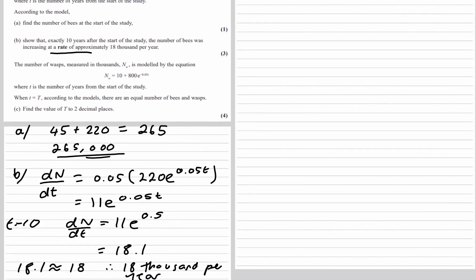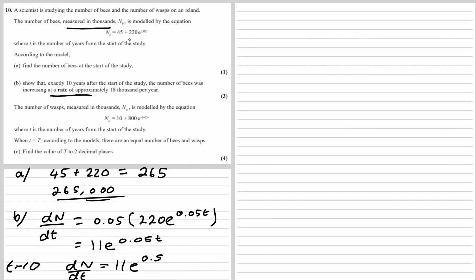For Part C, the number of wasps measured in thousands, nw, is modeled by nw = 10 + 800e^(−0.05t), where t is the number of years from the start of the study. When t equals capital T, there are an equal number of bees and wasps. We need to find the value of T to two decimal places. So we set 45 + 220e^(0.05t) = 10 + 800e^(−0.05t).